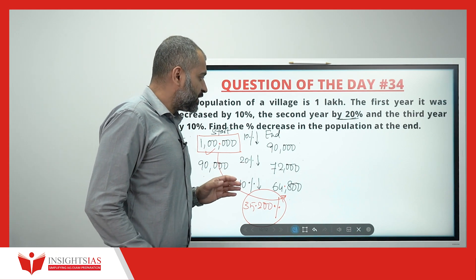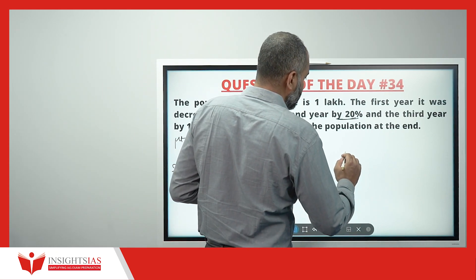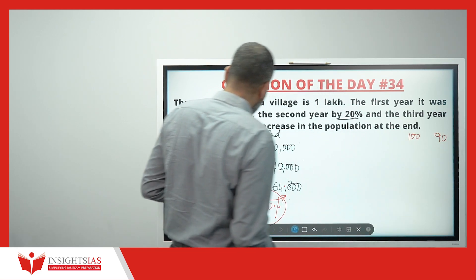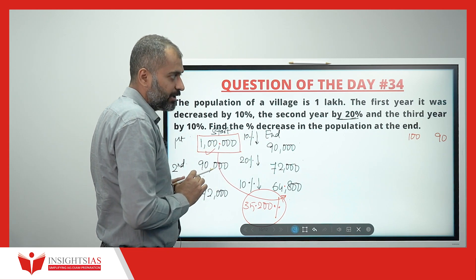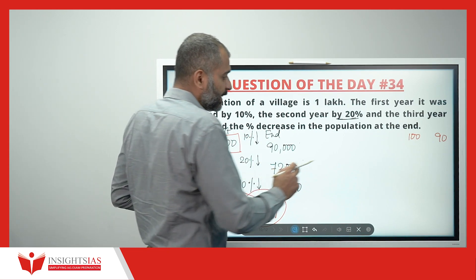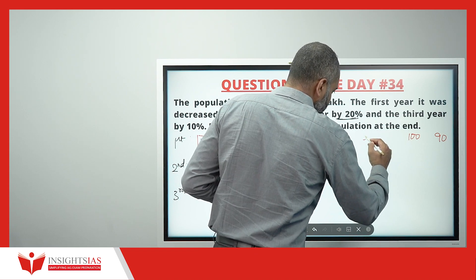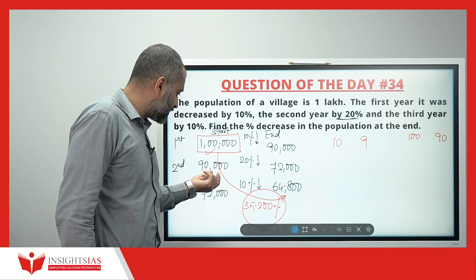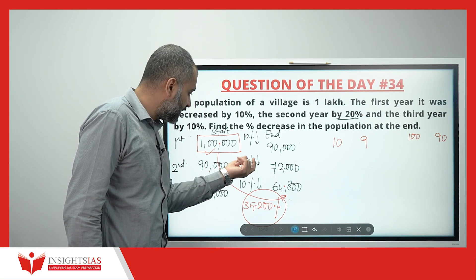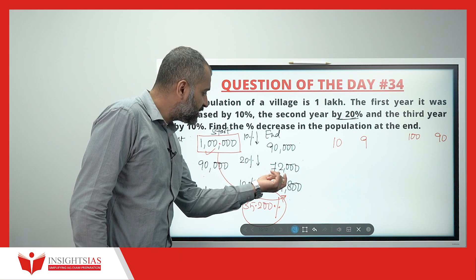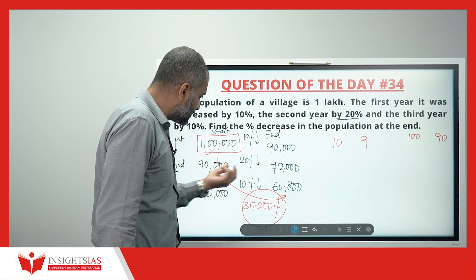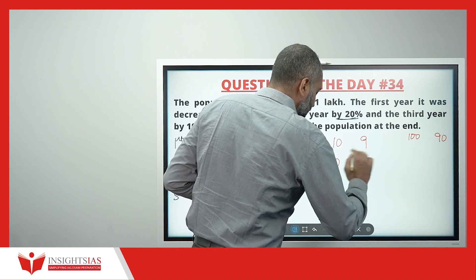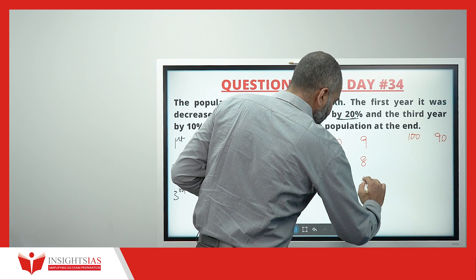The same question can be solved using a second technique. Consider the original population as 100%. At the end of the first year it becomes 90, or taking 10 as base, it becomes 9. In the second year there is a 20% decrease, so it becomes 80% — or if I consider it as 10, it becomes 8. In the third year, from 10 it becomes 9.